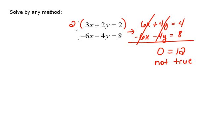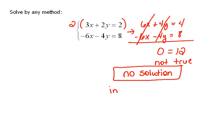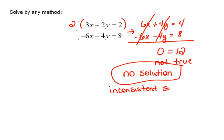This is not true — 0 does not equal 12. When we get an answer like this that is never going to be true, there's no way that 0 will ever equal something other than 0. This tells us the problem has no solution. This is called an inconsistent system, because it does not have an answer.